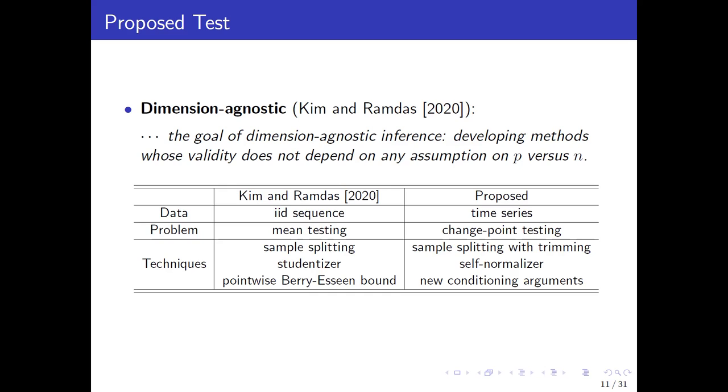I feel it's necessary to highlight the differences between these two papers. First, the data used in Kim's paper is just an IID sequence. But we consider a time series that allows for both temporal and cross-sectional dependence. Also, Kim and Ramdas only consider the mean testing problem, which is a typical one-sample problem. But the change point testing problem in our work is kind of a two-sample problem.